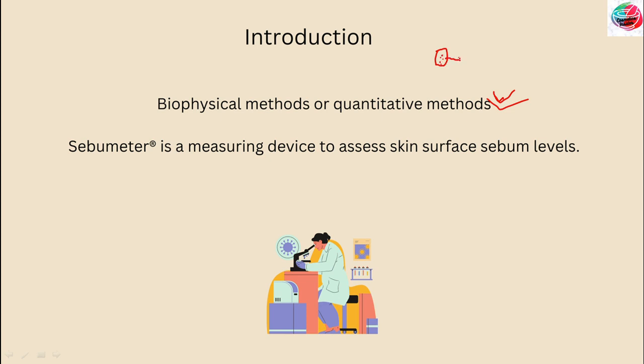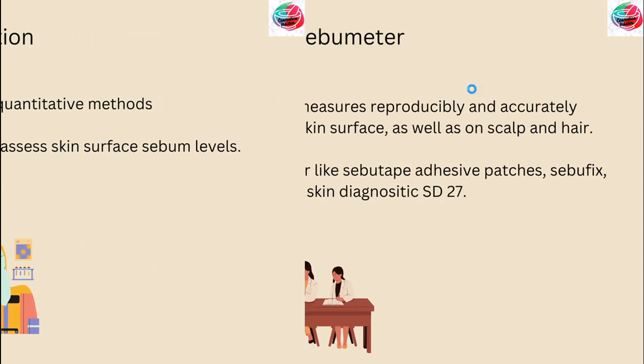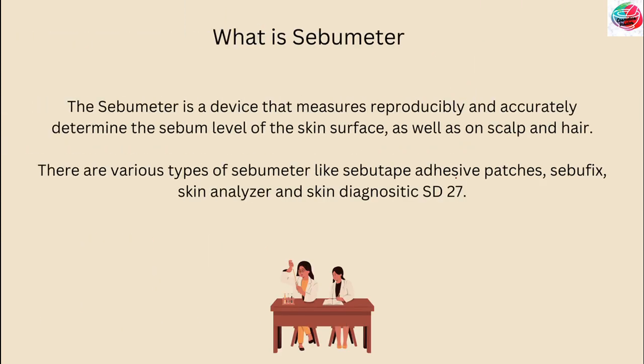They placed a pad of absorbent cigarette paper for 3 hours on a delimited area of forehead and then extracted the sebum with diethyl ether. There are various types of sebumeter like sebum tape, adhesive patches, sebum fix, skin analyzer, and skin diagnostic ST27.